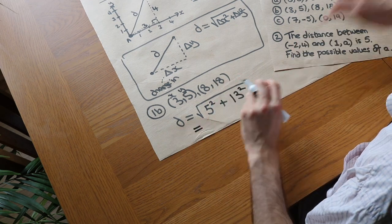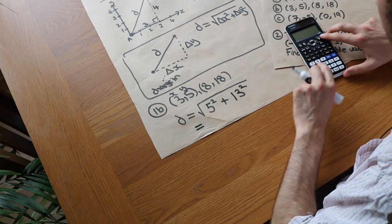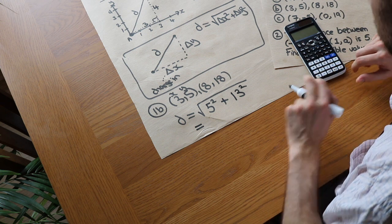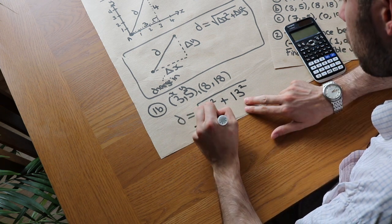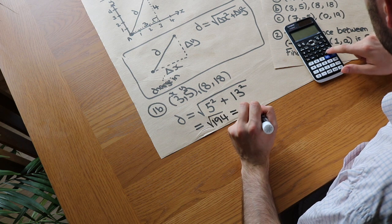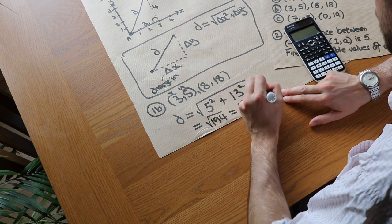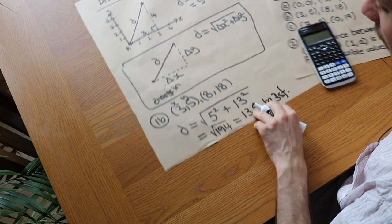And then when we put that in our calculator, we get the square root of 5 squared plus 13 squared is equal to the square root of 194, which as a decimal is 13.92 to 3 significant figures. And there we go, that's the distance between those.